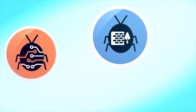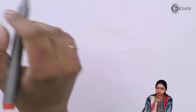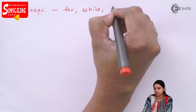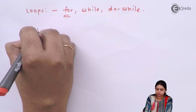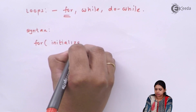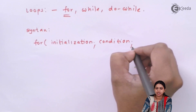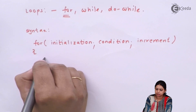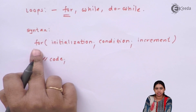Let us start with the for loop. There are three types: for, while, and do-while. The syntax of the for loop is: for(initialization; condition; increment) { code }. 'for' is a keyword. Inside the bracket we first write initialization, then condition, then increment, all separated by semicolons, and between the braces we write our code.